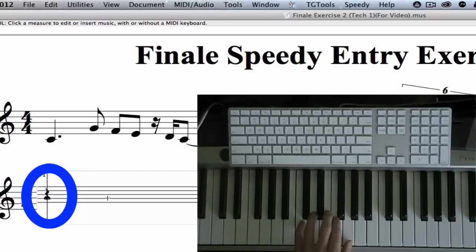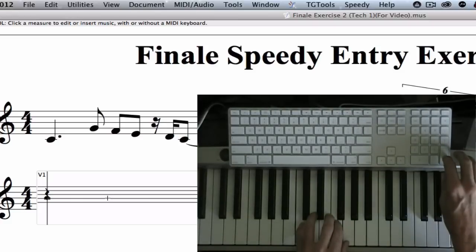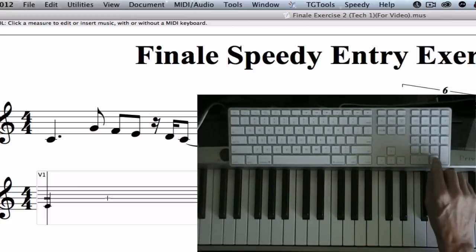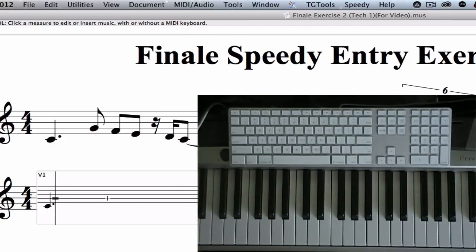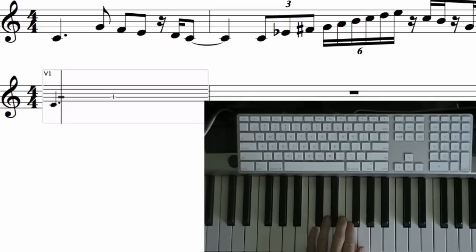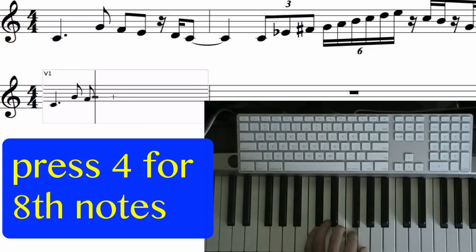Now I already put the rest in, so I can play the note and press enter on the number block and then it will convert it into that note. Now I need the dot. Move to the right with the arrow key. So now I play the next note, that would be the G, and press 4 for eighth note. F, 4 for eighth note. E, 4 for eighth note.